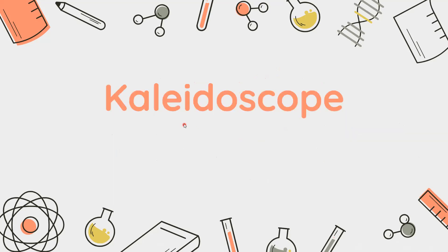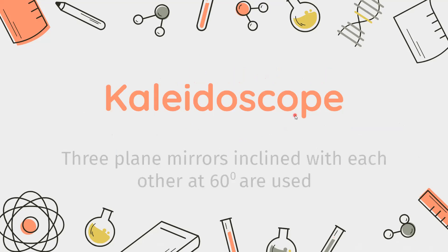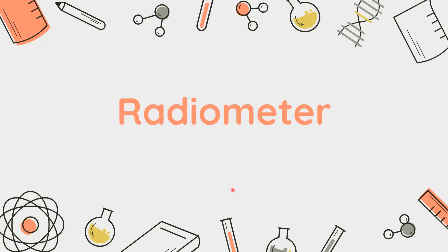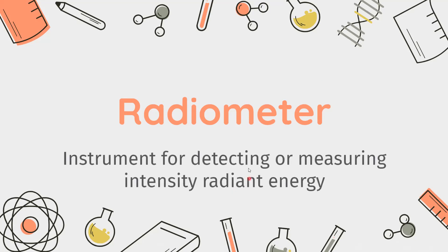Next is the Kaleidoscope. A Kaleidoscope is composed of three plane mirrors inclined to each other at an angle of 60 degrees. You must have seen a kaleidoscope — it's a long tube that shows different designs when you peek in. Next, the Radiometer is an instrument used for detecting or measuring the intensity of radiant energy.